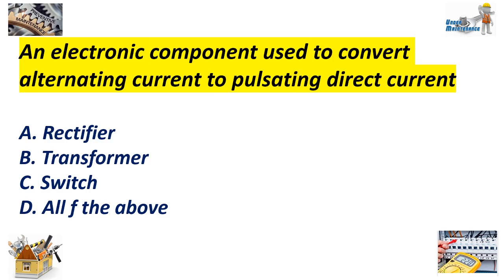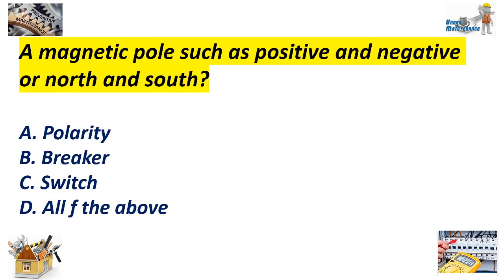An electronic component used to convert alternating current to pulsating direct current: A. Rectifier, B. Transformer, C. Switch, D. All of the above. Answer: A. A magnetic pole such as positive and negative or north and south: A. Polarity, B. Breaker, C. Switch, D. All of the above. Answer: A, Polarity.